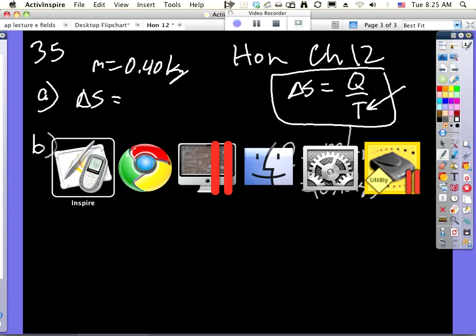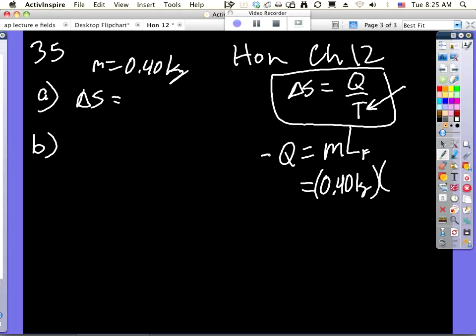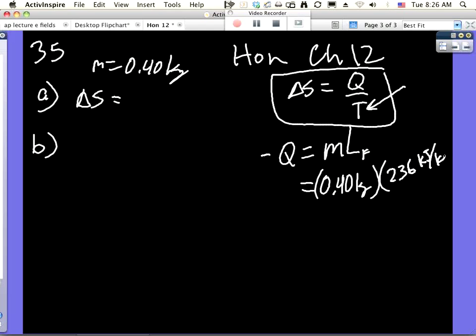Does anybody know the heat of fusion of silver? It's actually in your book. How much? 236? Okay, so it's 200... is it 236 kilojoules per kilogram? Okay, I'm guessing it's 236 joules per gram, so it's probably gonna be kilojoules per kg.